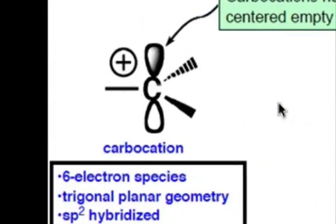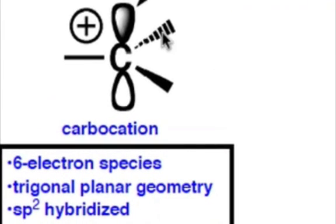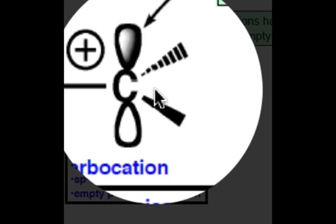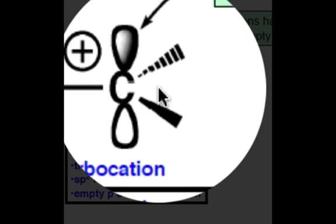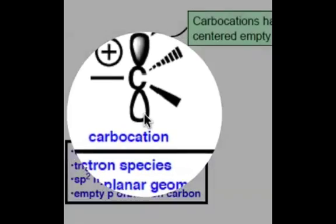Carbocations, as we've seen before, have three electron pair domains around them. Because there are three electron pair domains, the carbocation is sp2 hybridized. Because it's sp2 hybridized, there's an empty p orbital on that carbocation that sticks out perpendicular to the plane containing the three EPDs. This empty p orbital is where the positive charge resides.